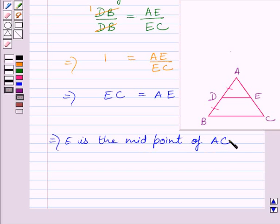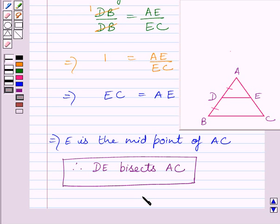So, we can say DE bisects AC. We were required to prove this only. So, we can say DE bisects AC, hence proved. This completes the session. Hope you understood the session. Take care and have a nice day.